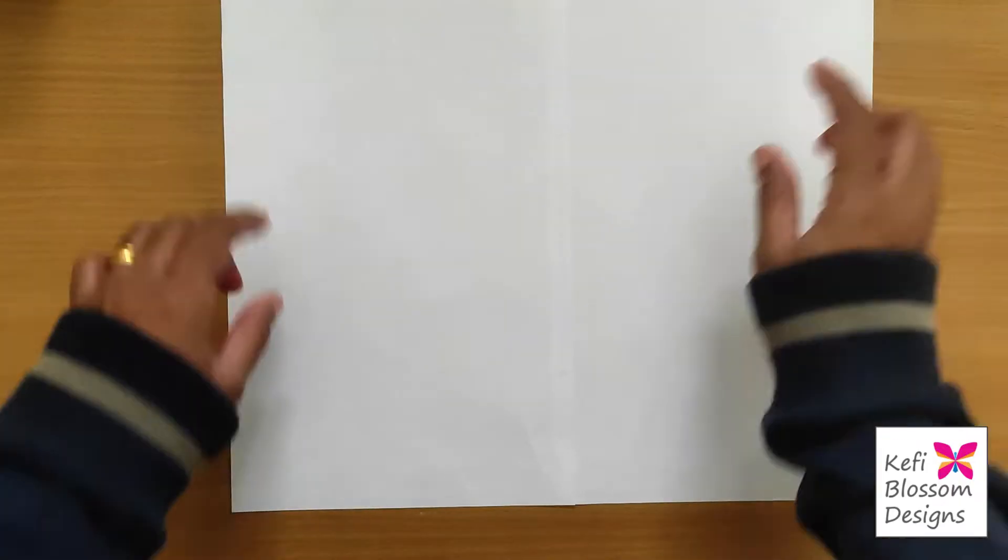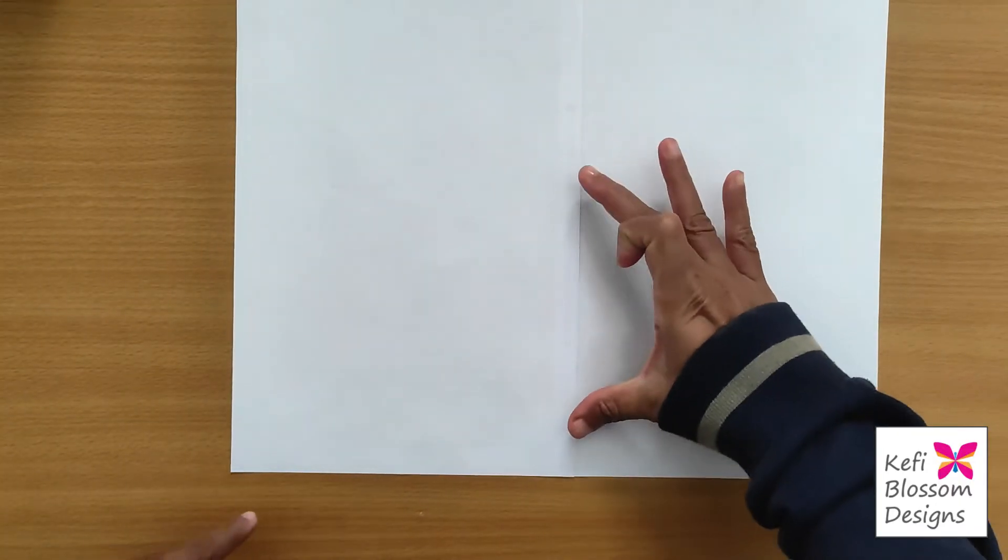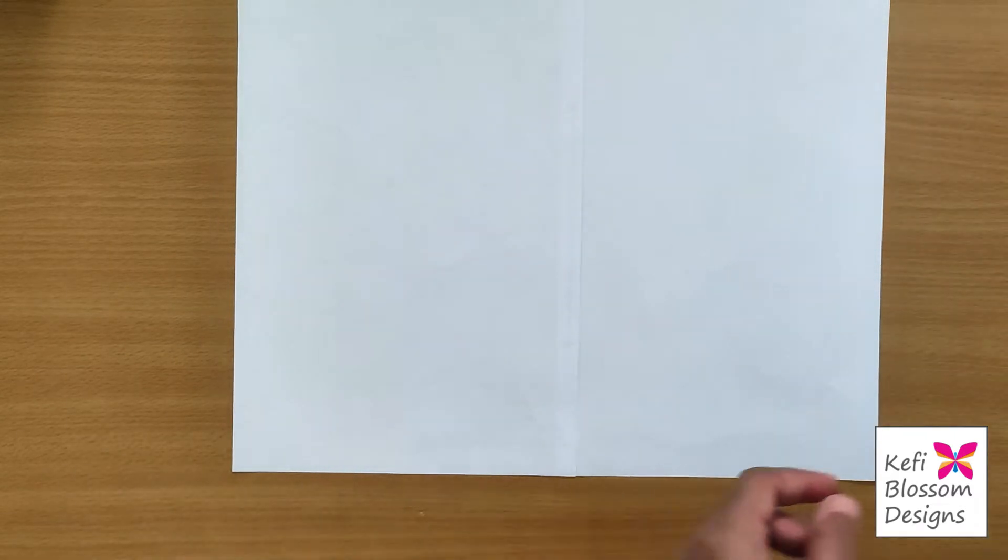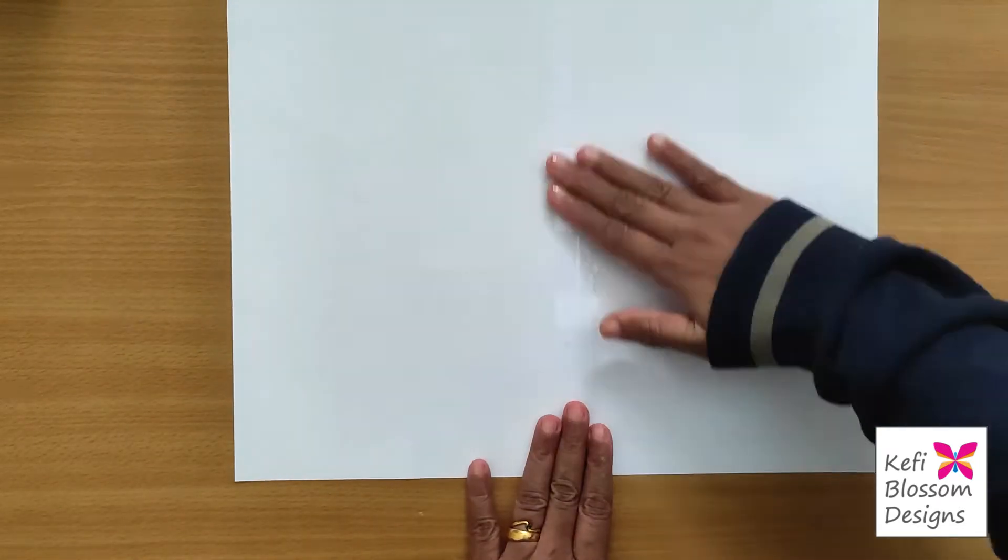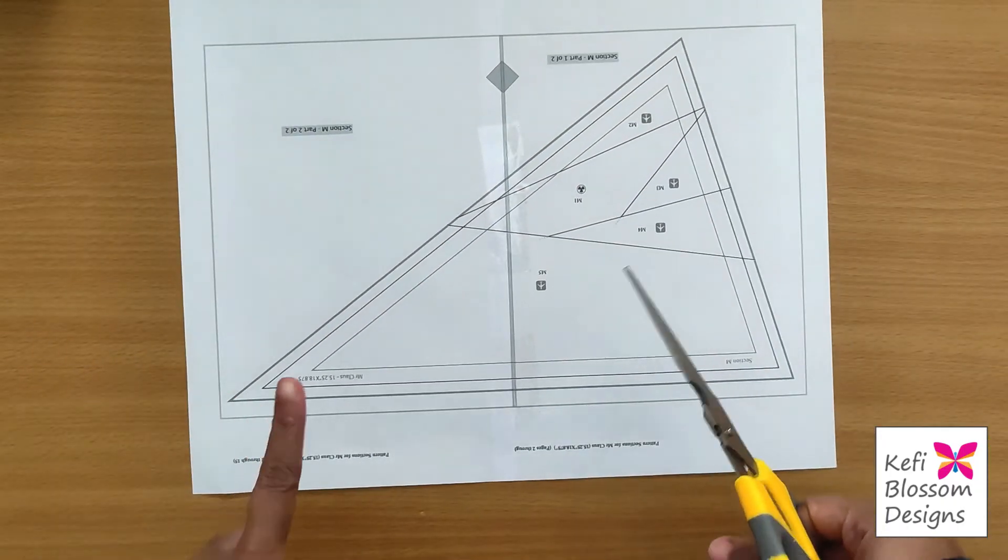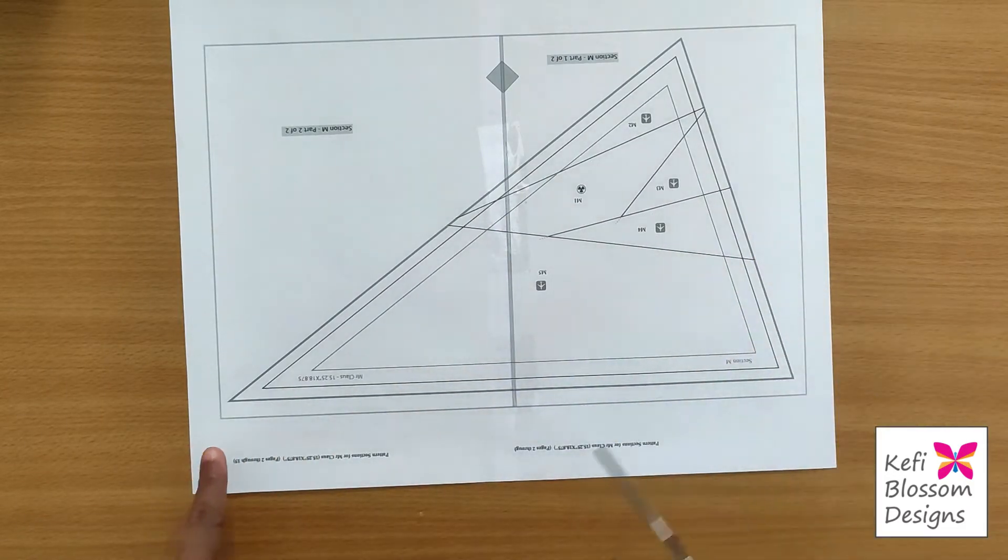If you want, you can do the back also. Now I can see the section is only so much, so I'll tape only that part. Taping the back is optional. That's it. Now our section is joined and we can cut out our section.